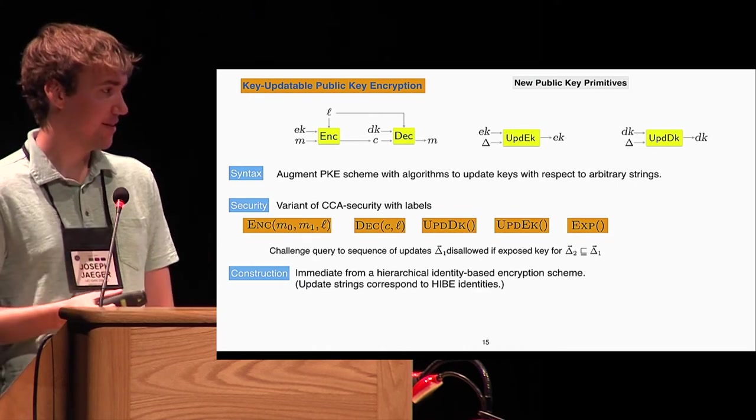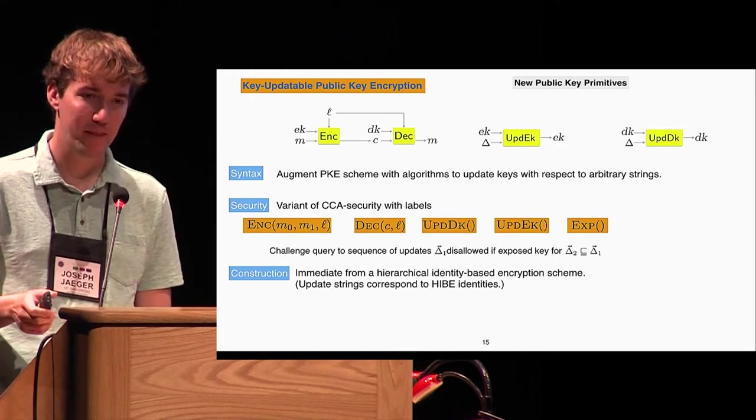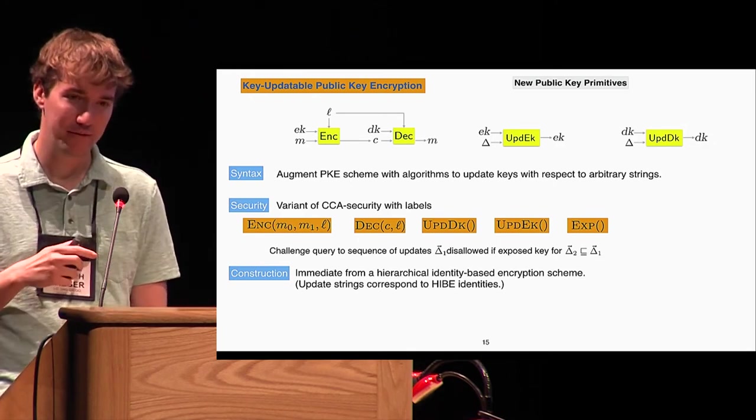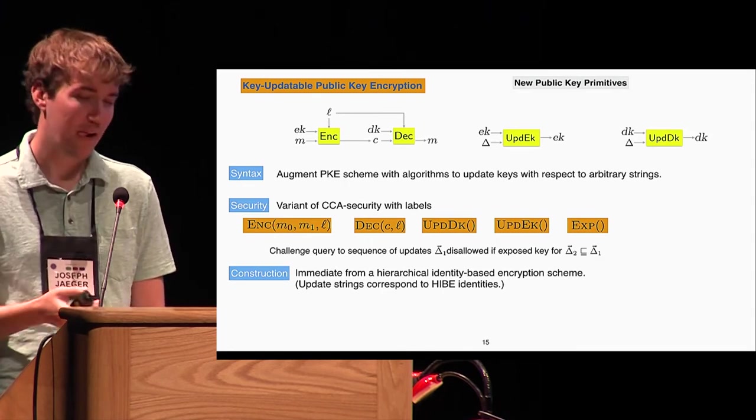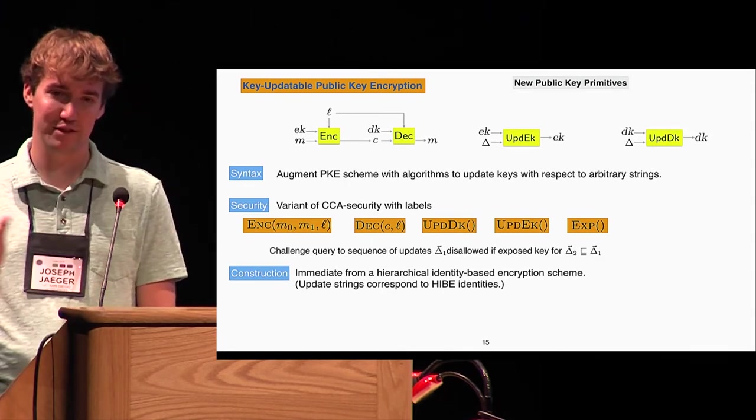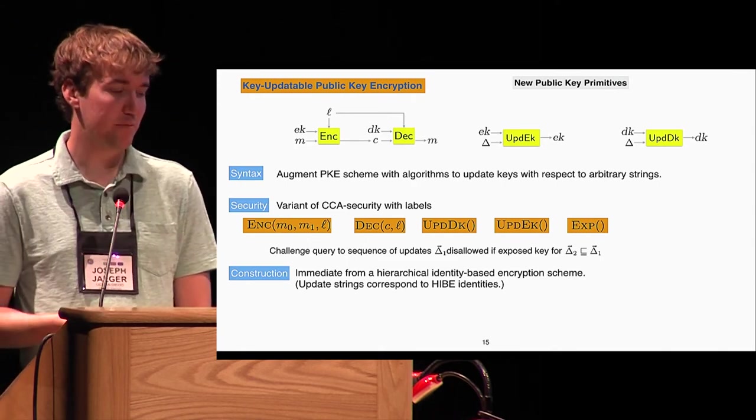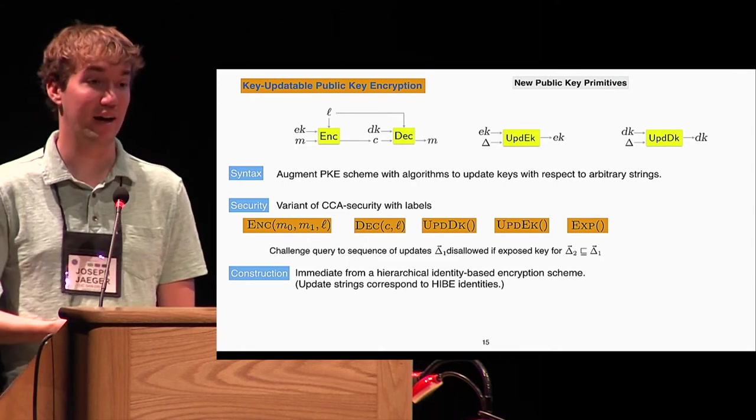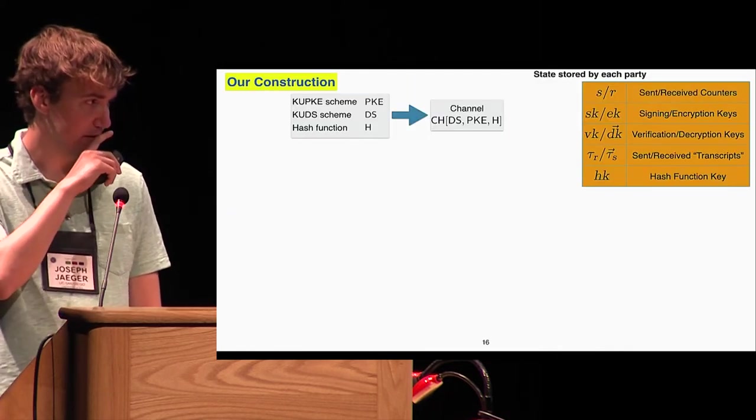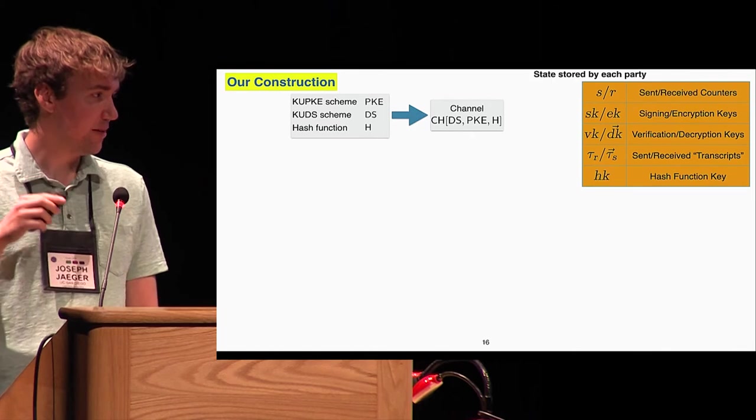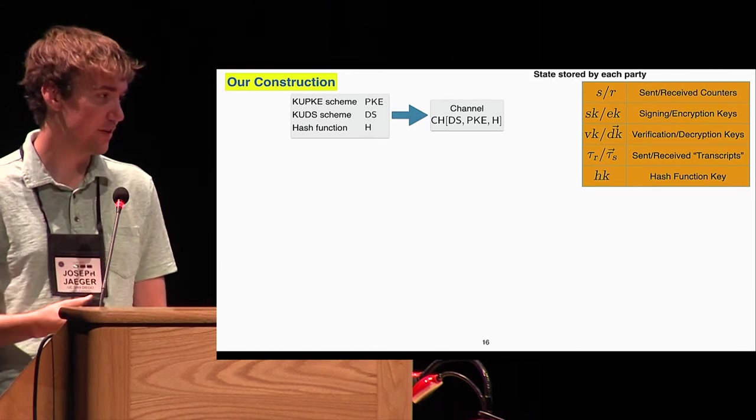The construction of this is actually somewhat straightforward from hierarchical identity-based encryption. If you kind of look carefully at what we defined, what we really defined is a special case of HIBE where the deltas correspond to parts of the identity we're updating and we just take a single path down the HIBE tree.